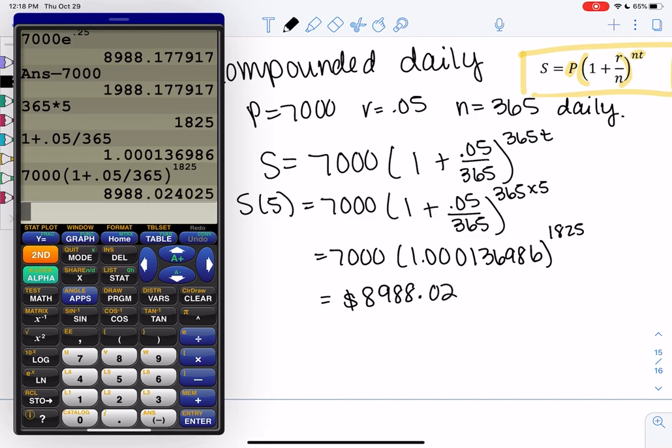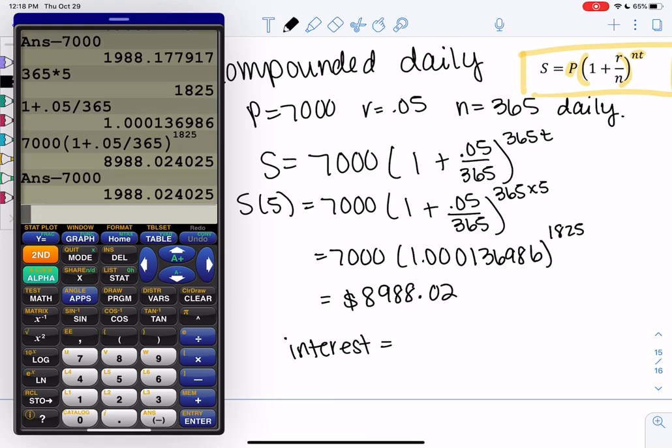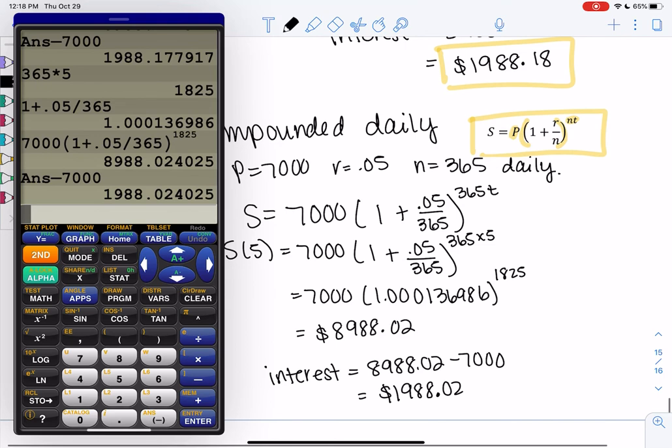And then we'll find interest again by subtracting 7,000. So minus 7,000. And we get interest of 1,988 and 2 cents. So it's really not much. It's only off by about 16 cents from the previous, from continuous. So continuous gives us a pretty good estimate.